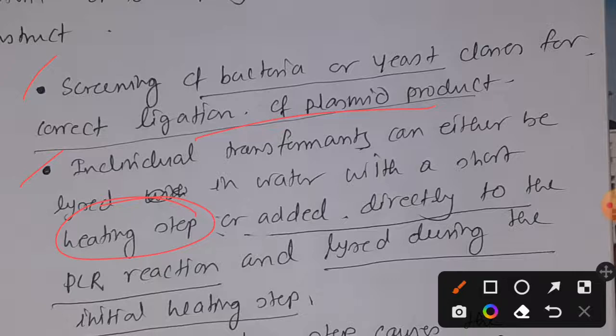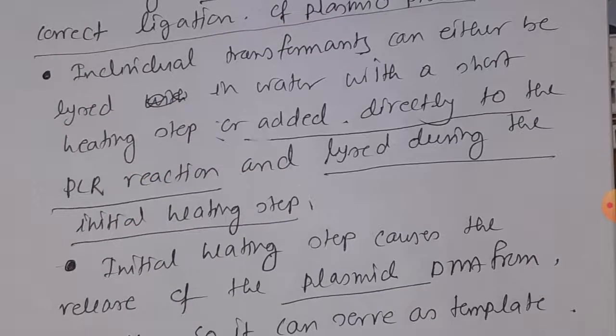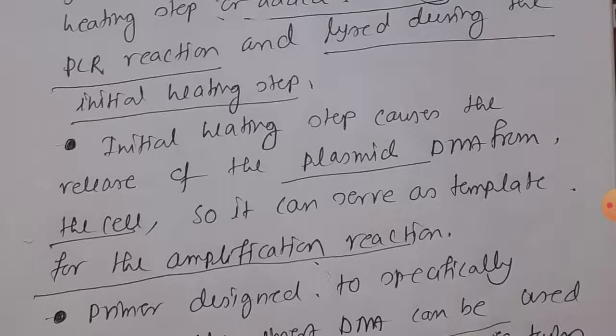It helps us screen bacteria or yeast clones for correct ligation of the plasmid product. Individual transformants can either be lysed in a tube with water by an initial heating step, or we can directly add them in PCR which will lyse the cell during the initial heating step. This initial heating step causes the release of the plasmid DNA from the cell.